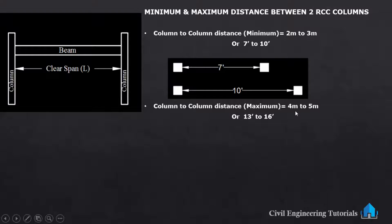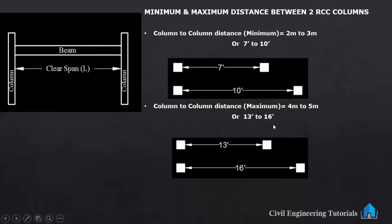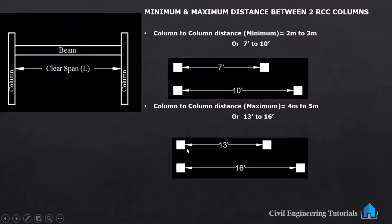The maximum column-to-column distance you can take is 4 meters to 5 meters, that is 13 feet to 16 feet. Here you can see the column-to-column distance is 13 feet and this is 16 feet. This is the maximum distance if you are constructing up to a 3 or 4 storey building, using a column size of 9 inch by 9 inch or 9 inch by 12 inch. So to summarize: minimum is 2 to 3 meters (7–10 feet) and maximum is 4 to 5 meters (13–16 feet).